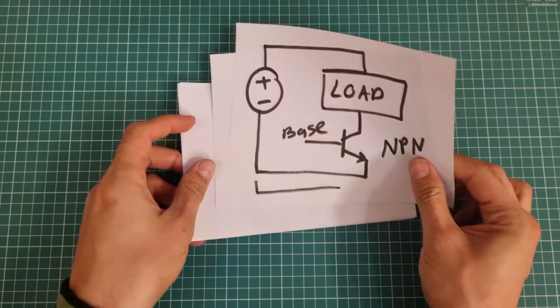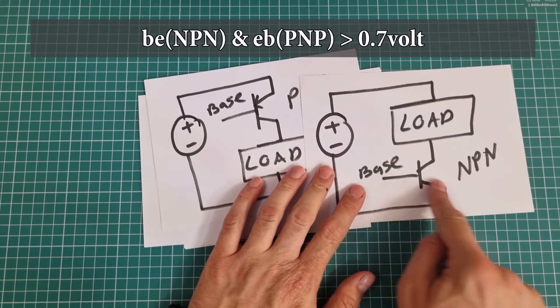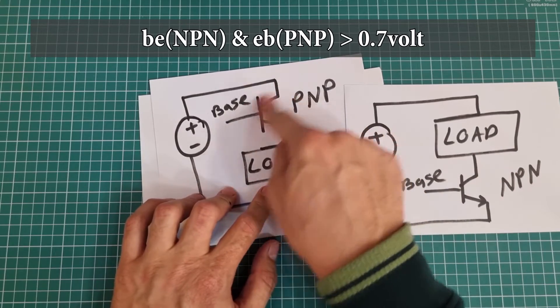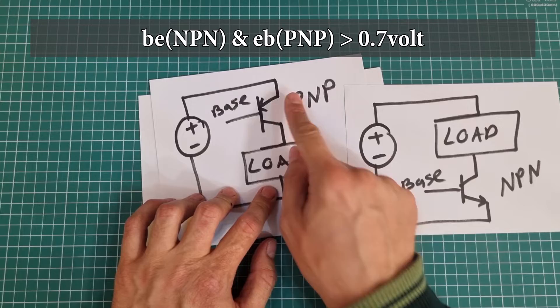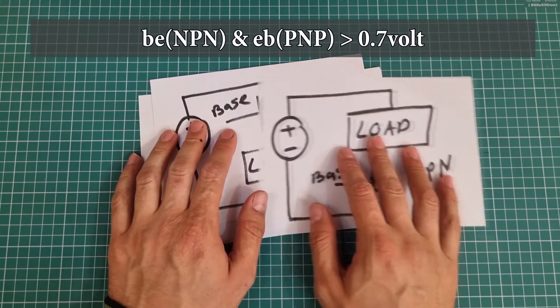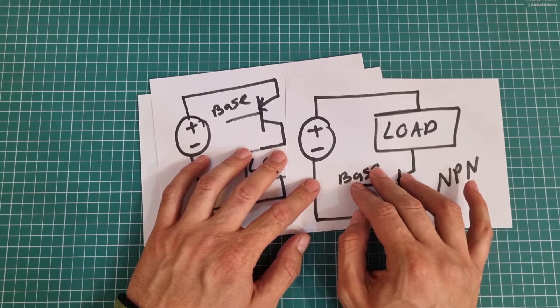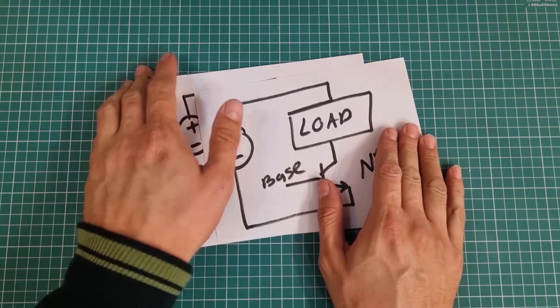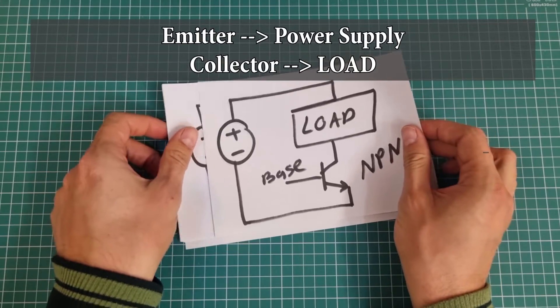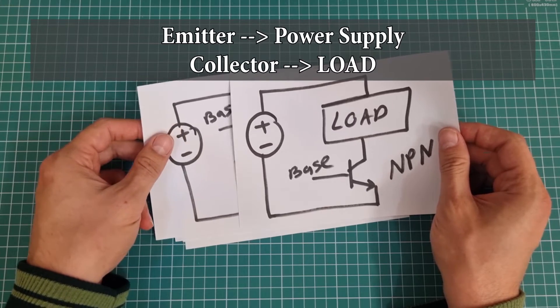You may wonder why switching NPN type transistors are easier than their PNP counterpart. Let's discuss about it. According to our basic knowledge about BJT transistors, base-emitter voltage in NPN transistors and emitter-base voltage in PNP transistors must be more than 0.7 volts to turn the transistor on and take it into forward active or saturation modes. Otherwise, the transistor will fall into cutoff mode and will turn off.